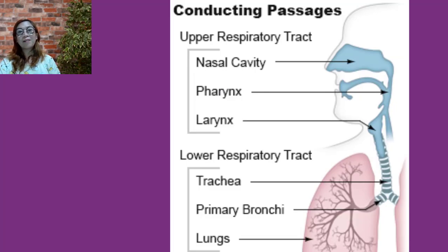The respiratory conducting passages are divided into the upper respiratory tract and the lower respiratory tract. The upper respiratory tract includes the nose, pharynx, and larynx. The lower respiratory tract consists of the trachea, bronchial tree, and lungs. These tracts open to the outside and are lined with mucous membranes. In some regions, the membrane has hairs that help filter the air.